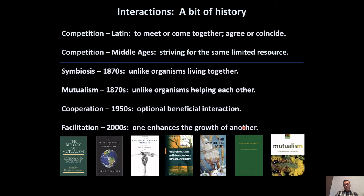Moving further in time to the 1950s, we get discussions about cooperation — interactions that are beneficial but not obligate, something organisms opt in or out of. Closer to now, in the early 2000s, Reagan Calloway talked about facilitation: one organism helping another but not really getting anything in return. There have been very many scientific books published on mutualism and symbiosis, and this discussion very much goes on to this day. I'm going to be focusing on plant-fungal interactions and we'll see how some of these terms come into play.